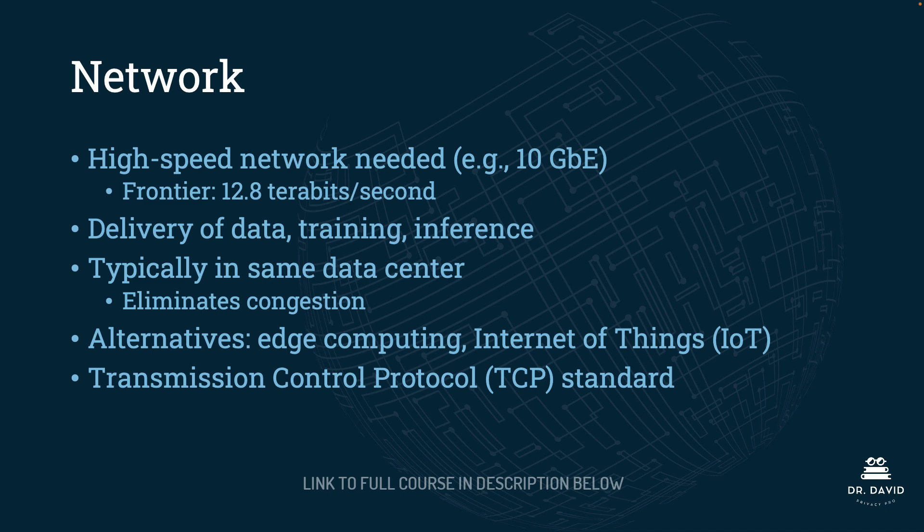I would love to have that, though it would probably be a waste because I'm certainly not using all of my devices simultaneously, and even if I was, I would not reach 12.8 terabits per second. Network speed is really important for delivery of the data used during training, and then once we are generating output, the inferences. When talking about supercomputers and wanting the best compute possible, we're typically talking about having all of our devices or our supercomputer all within the same data center. This helps to eliminate the congestion that would be necessary to disperse that data geographically, to process it at different geographical locations, and then send all of that data back.